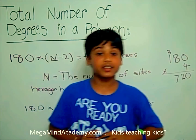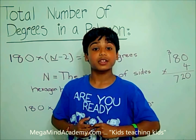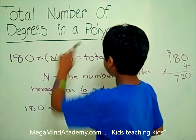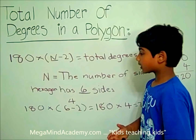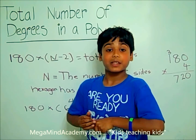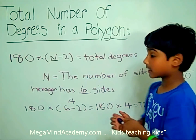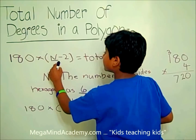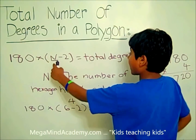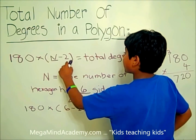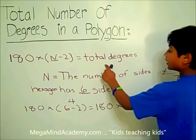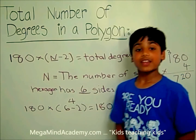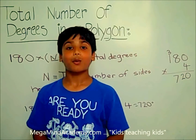Today we learned about the total number of degrees inside a polygon. The easy formula is 180 times (number of sides minus two) equals the total degrees. Thank you for watching.